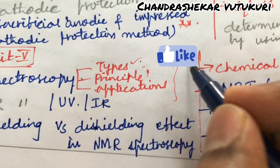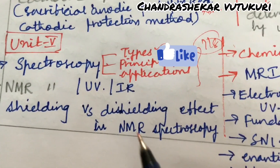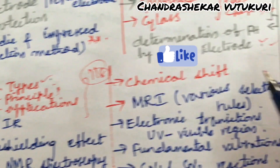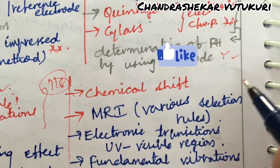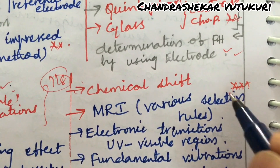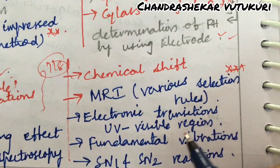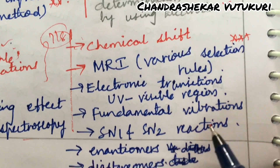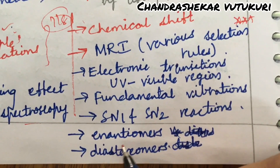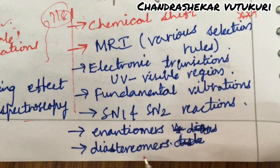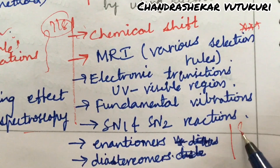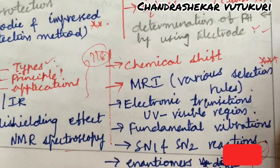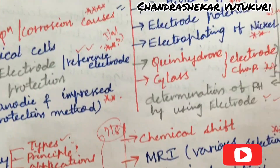It is all about questions 7 as well as 8. Shielding versus deshielding effect in NMR spectroscopy and the chemical shift, MRI various selections, is said to be a topmost gunshot question. Electronic transitions in the UV visible region, fundamental vibrations in IR, as well as SN1 and SN2 reactions, enantiomers and diastereomers are said to be very important questions, and this is said to be the eighth question in your question paper.